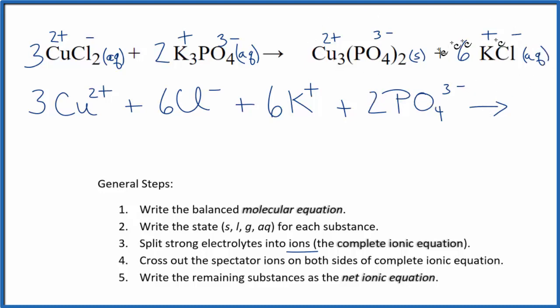Now we can do the products. When we do net ionic equations, we actually don't split up solids, liquids, or gases. So since this is a solid, it's at the bottom of the test tube, it's not broken apart into ions. We just leave it like it is. It'll be Cu3(PO4)2. That'll be a solid. It'll stay together. Plus, we have the potassium ion. That does break apart, six of those. Plus, we have one times the six, six chloride ions.